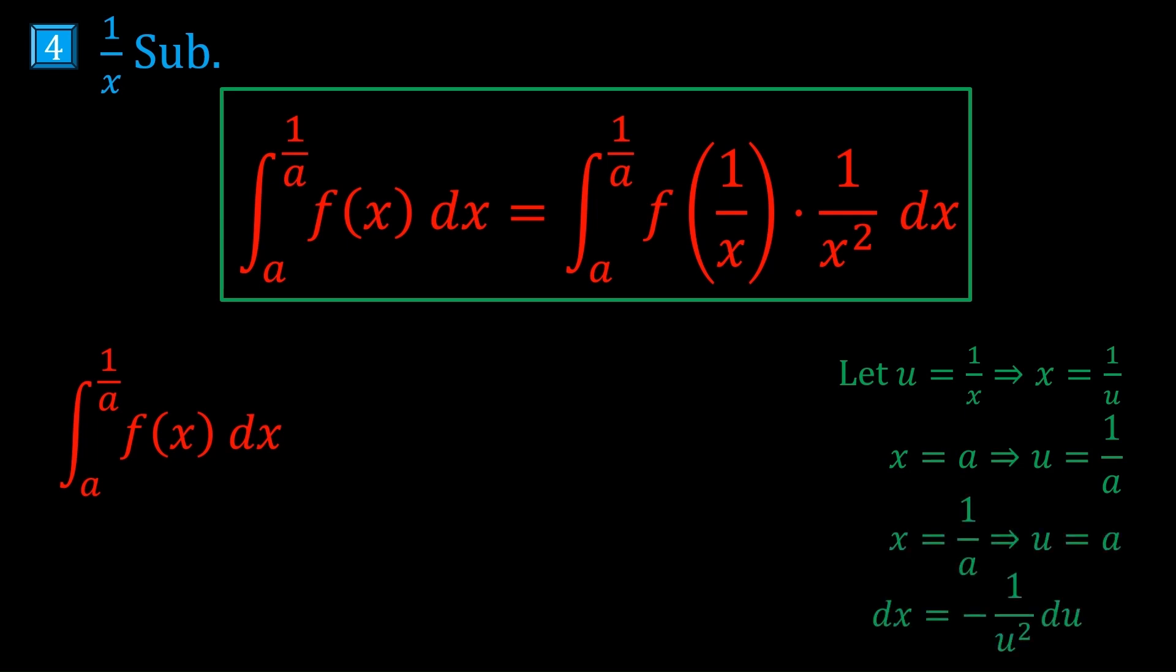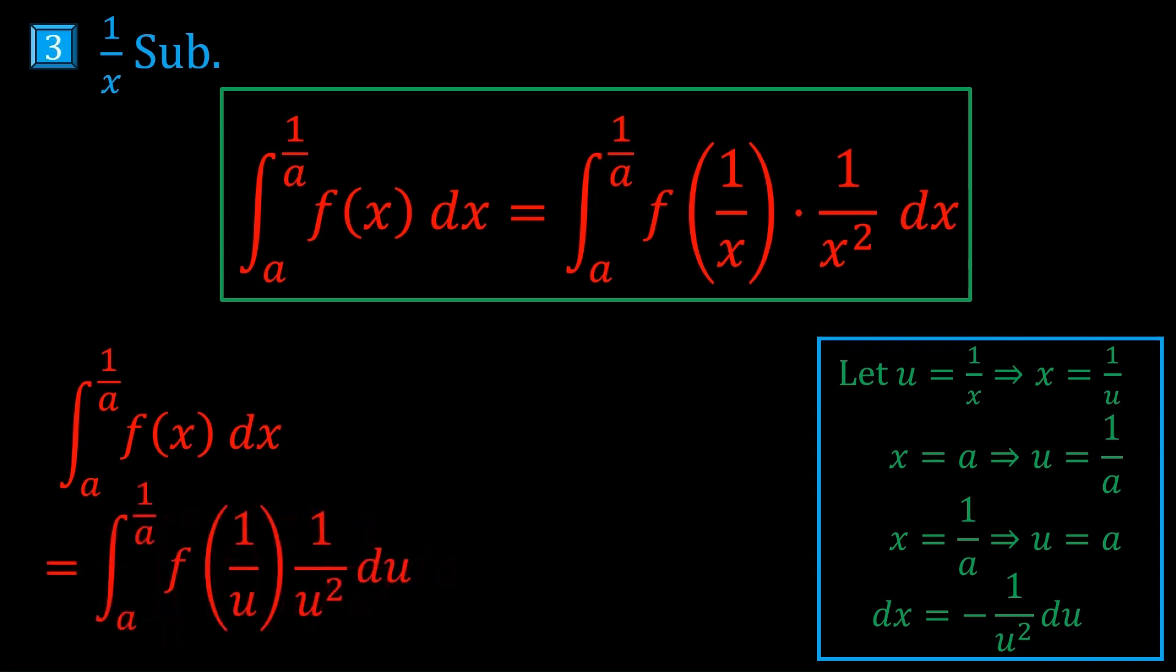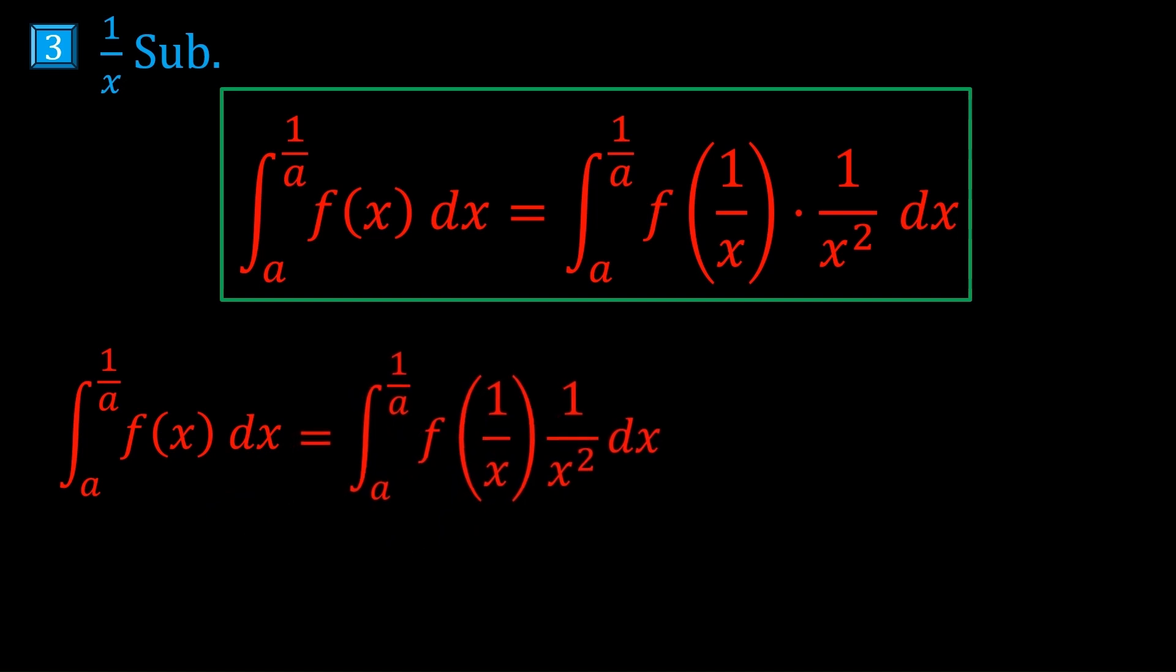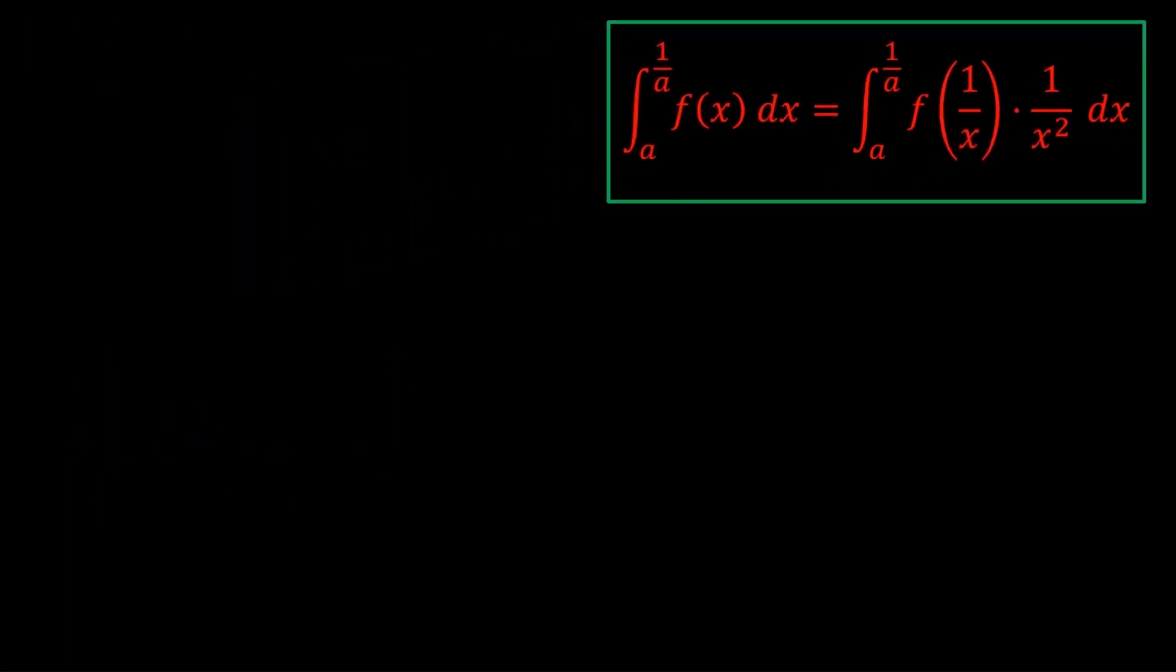And also dx is -1/u² du. Now we can use this minus sign to swap the bounds. And then dummy variable u to x because the variable doesn't matter as long as the structure of the integrand and also the bounds are the same. Okay, let's see this trick in action.